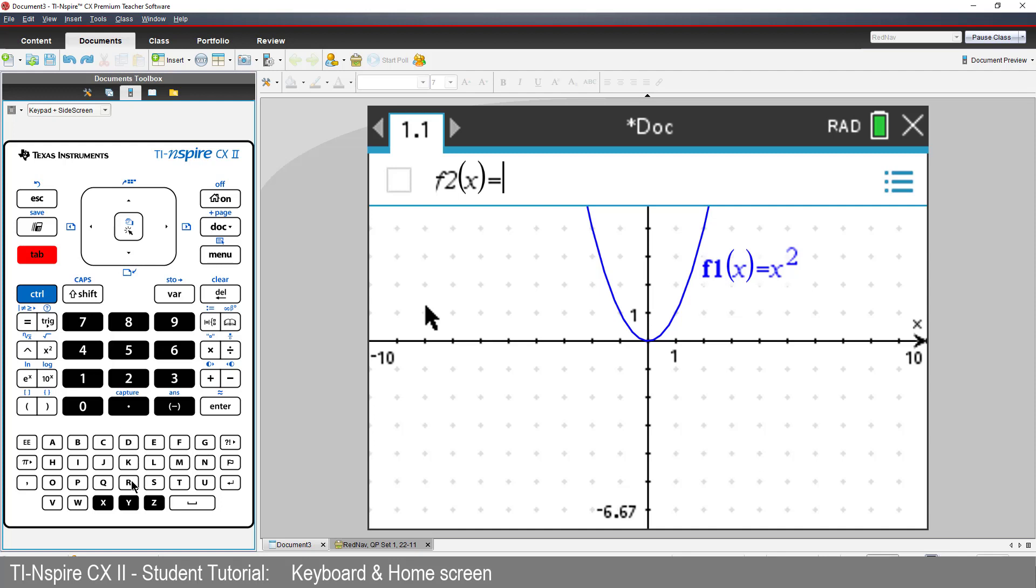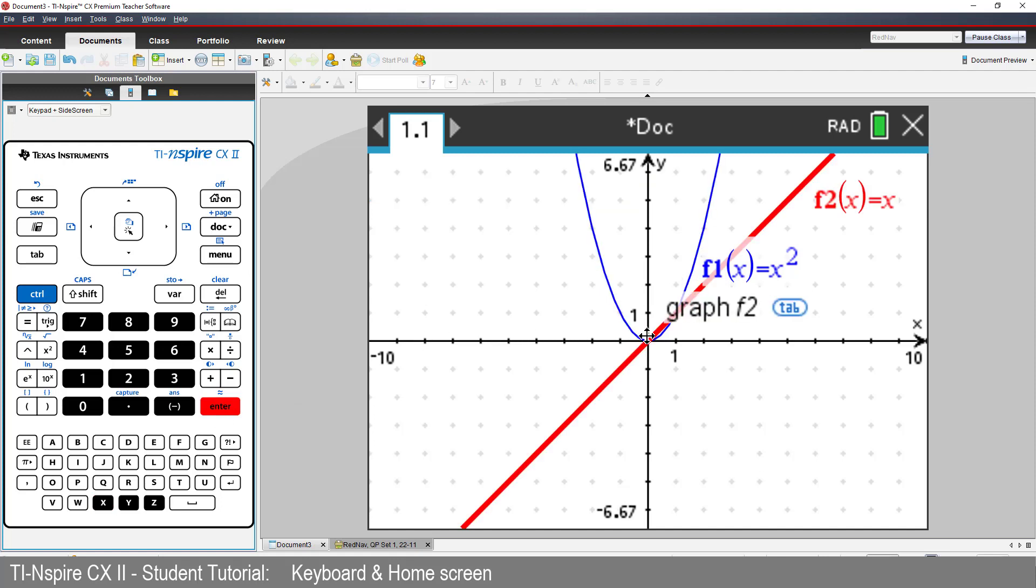This time I'll enter the function Y equals X. Try grabbing the linear function and moving it around the screen. Watch the text tip to make sure you know which graph you're grabbing.